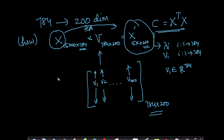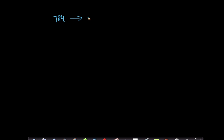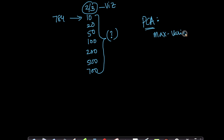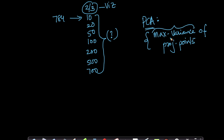Now the big question that often pops up is: what is the right number? Going from 784 dimensions, should I go to 10, 20, 50, 100, 200, 500, or 700 dimensions? When you want visualization it's 2 or 3, but when you don't want visualization, what is the right number? Let's go to the fundamentals: in PCA, we are trying to maximize the variance of the projected points.